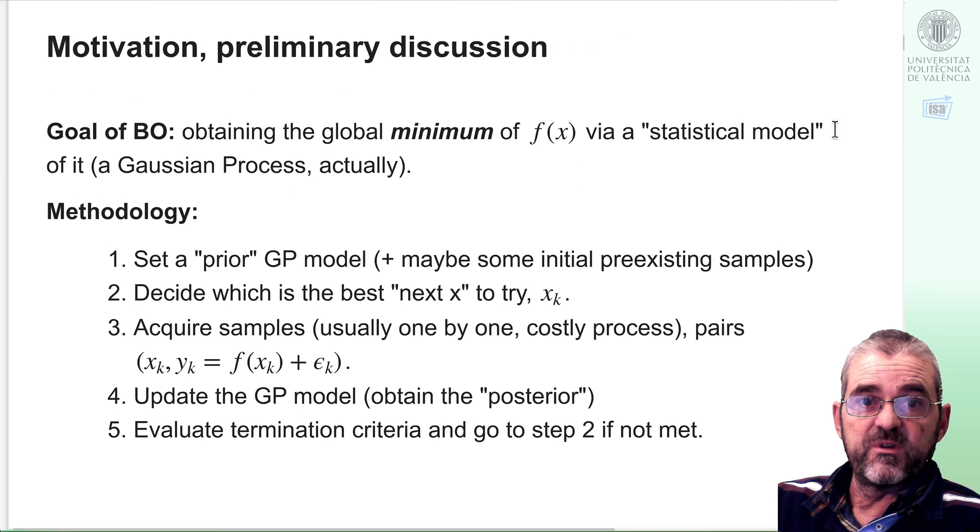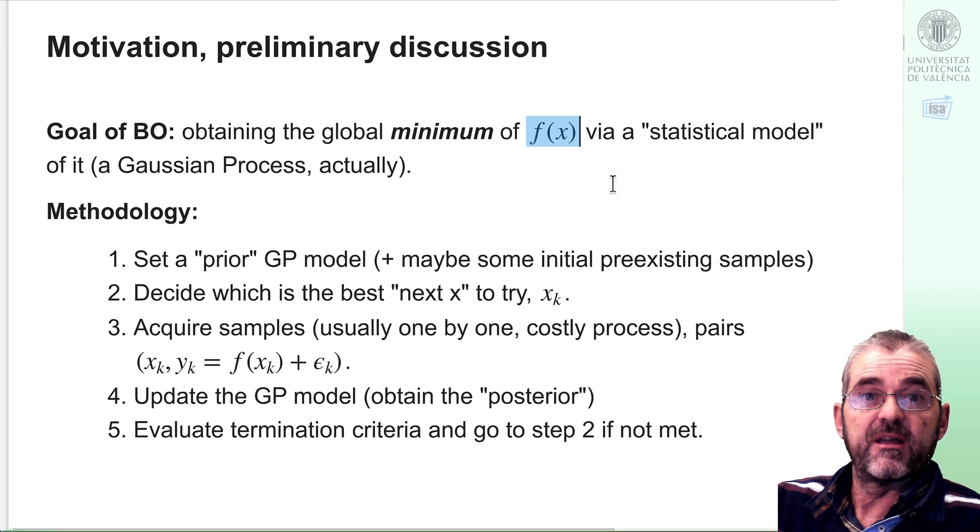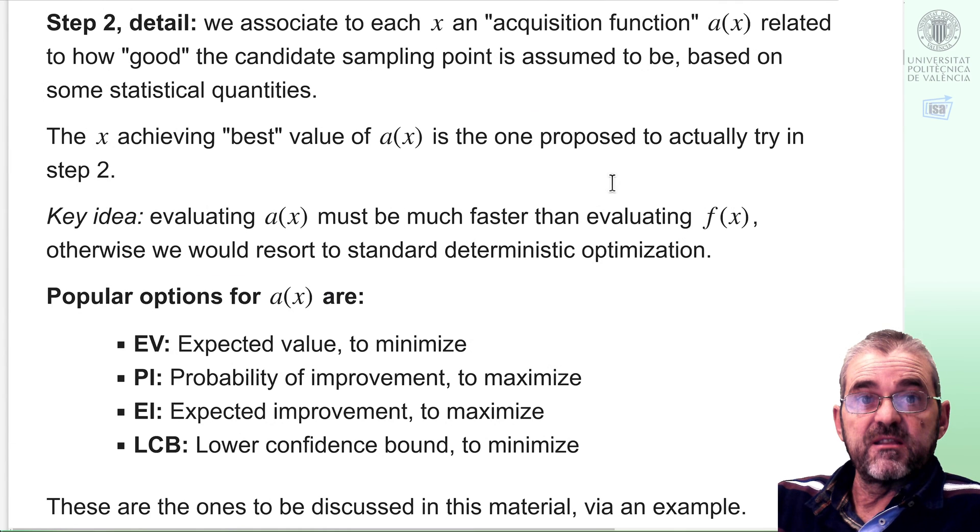If we recall, the basic Bayesian optimization methodology is having a prior and perhaps some pre-existing samples, then we need to decide which is the most promising sample point, and then we acquire the samples, we update our statistical model, and we repeat until some termination criteria is met.